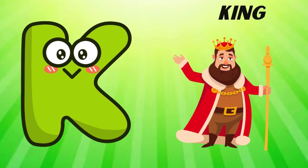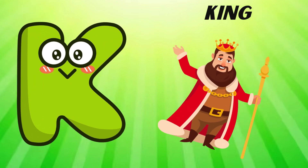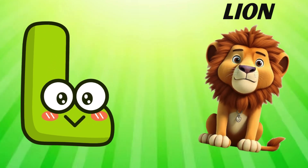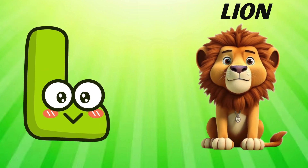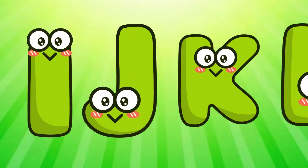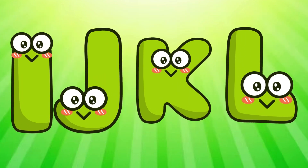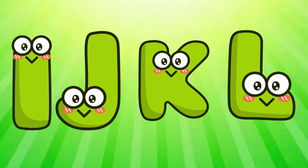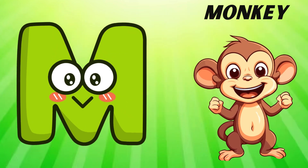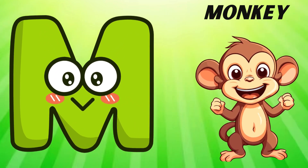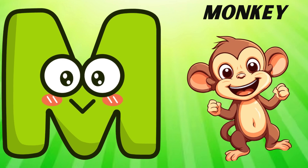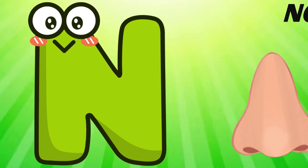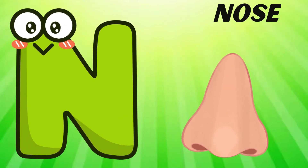K is for king, k-k-king. L is for lion, l-l-lion. M is for monkey, ma-ma-monkey. N is for nose, n-n-nose.